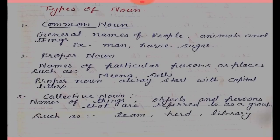There are 5 types of noun: common noun, proper noun, collective noun, material noun, and abstract noun. First, we will take common noun. Common noun is a general name of people, animals, and things — like man, boy, girl, city, horse, sugar, etc.